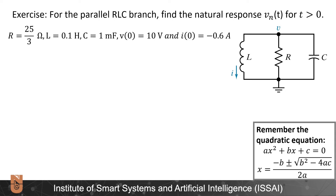For the parallel RLC branch example, we need to find the natural response V_N for t greater than zero. The given parameters are: R equal to 25/3 ohms, L equal to 0.1 henry, C equal to 1 millifarad, V(0) equal to 10 volts, and I(0) equal to minus 0.6 amperes. Remember that for this RLC branch, depending on the parameter values of R, L, and C, we could have under-damped, over-damped, or critically damped responses.